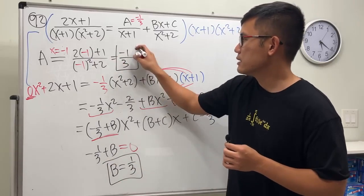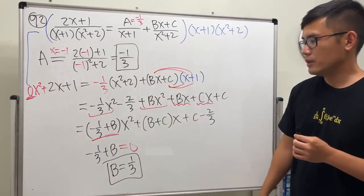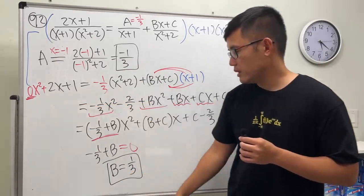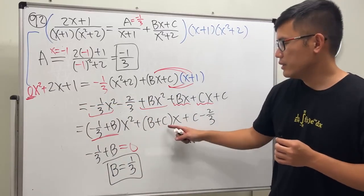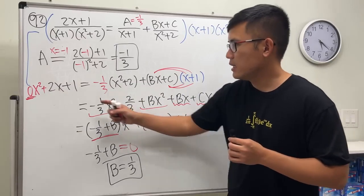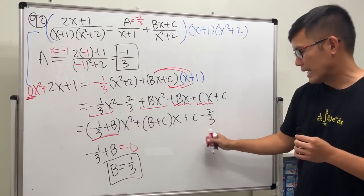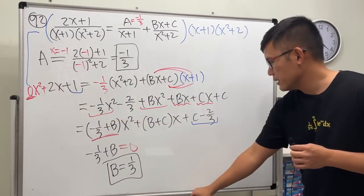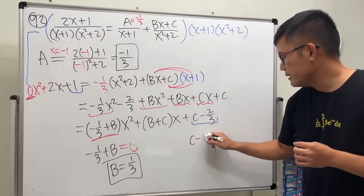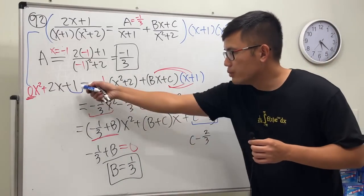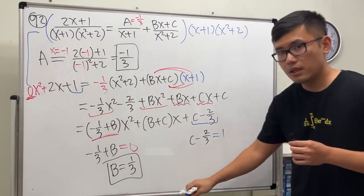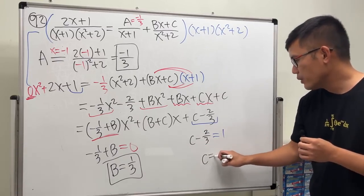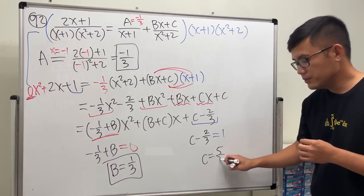So a is negative one third and b is one third. For c, you can set up using the x term: we know b already, so one third plus c has to equal 2. Or we can use the constant term: c minus two thirds has to equal the constant on the left-hand side, which is 1. Adding two thirds to both sides gives c equals 1 plus two thirds, which is five thirds.